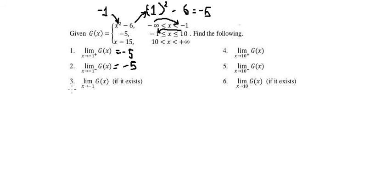Question 3. We have the limit as x approaches negative 1 (two-sided). As you can see, we consider the value as x approaches negative 1 from the positive side and from the negative side. They have the same value, meaning the limit as x approaches negative 1 exists and equals negative 5.